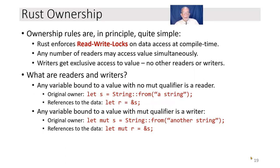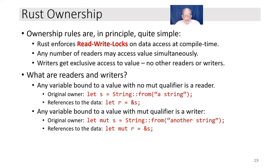Let's talk about ownership. The ownership rules are really fairly simple in concept. The Rust ownership policy is a reader-writer lock. Any number of readers can view a value, but if there is a writer, one and only one writer and no readers can view that data. So we can have a single writer or we can have multiple readers. Readers are divided up into a couple of categories, which we'll get to next. Any number of readers may access the value simultaneously, while writers get exclusive access — no other readers or writers.